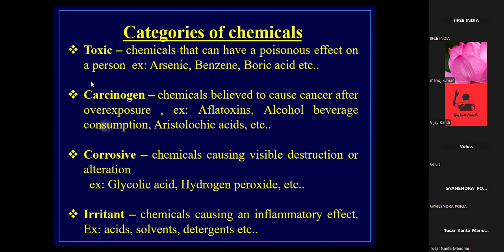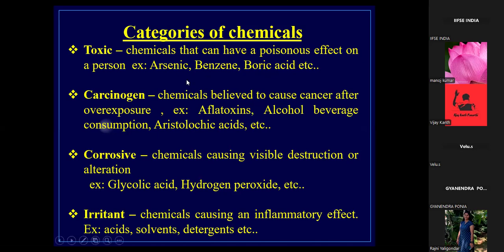The first category of hazardous chemicals is toxic chemicals — those that can have a poisonous effect on a person. Examples include arsenic, benzene, and boric acid. Do we use boric acid in our daily lives? If it is toxic, why do we use it?